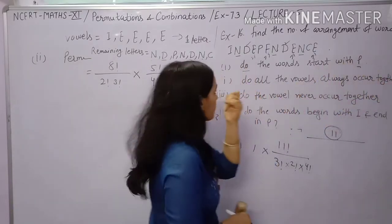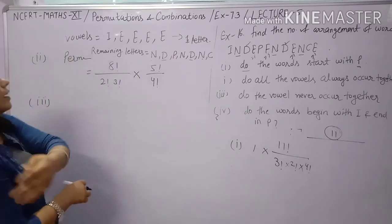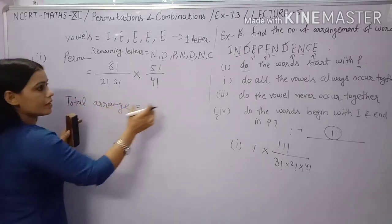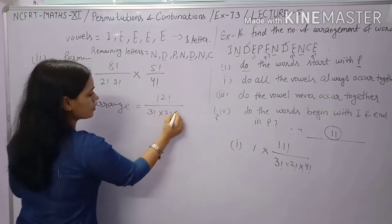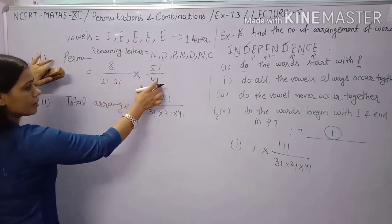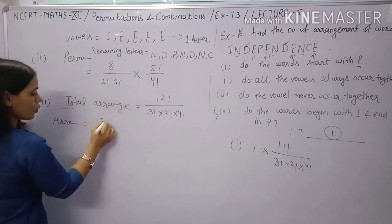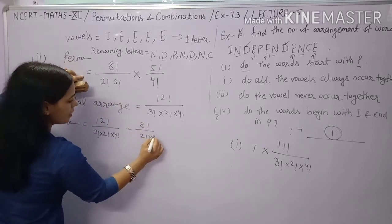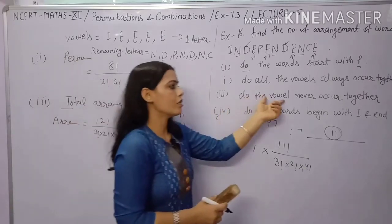Third condition: vowels never occur together. Total arrangements = 12! / (3! × 2! × 4!). Subtract arrangements where all vowels are together: [8! / (3! × 2!)] × [5! / 4!]. Answer = 12! / (3! × 2! × 4!) − [8! / (3! × 2!)] × [5! / 4!].